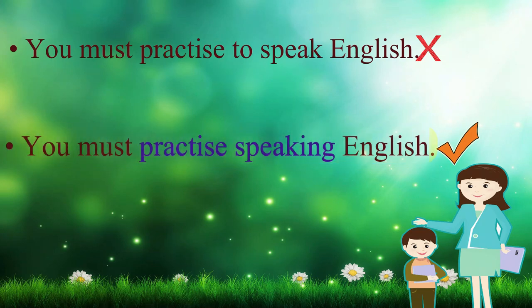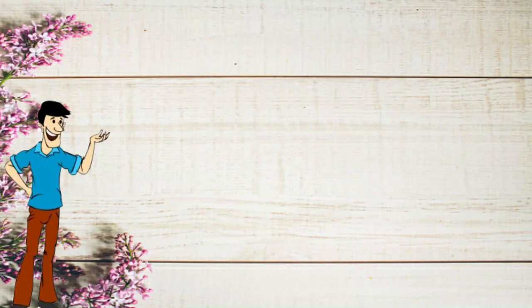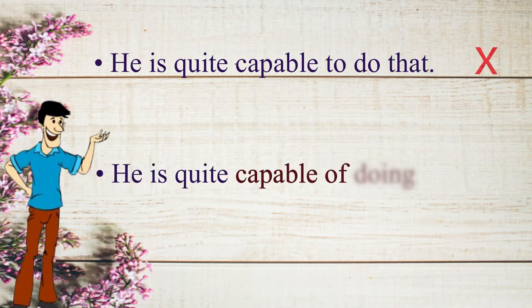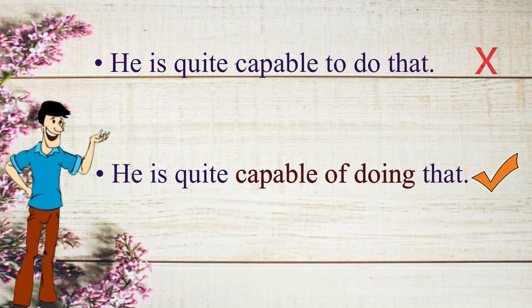The next one is: 'He is quite capable to do that.' It is incorrect. We say, 'He is quite capable of doing that.'